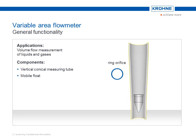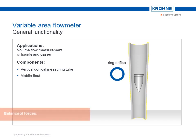When there is no flow, gravity keeps the float at the bottom end of the measuring tube. As soon as the medium flows through the tube from bottom to top, the float rises until the acting forces are in balance.